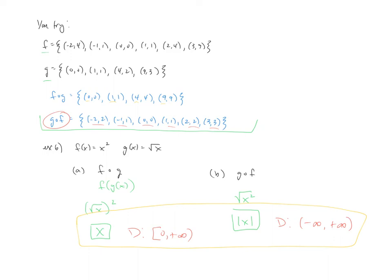When you start with function g, function g only allows you to use numbers that are zero and bigger. So when you take g and plug it inside f, you've been restricted from the start — and if you've been restricted from the start, you're going to be restricted until the end. On part b, when you start with f, f's domain is everything, so you're not restricted at all. As you see, you're still not restricted with the absolute value of x, so the inputs can be anything from negative to positive infinity.